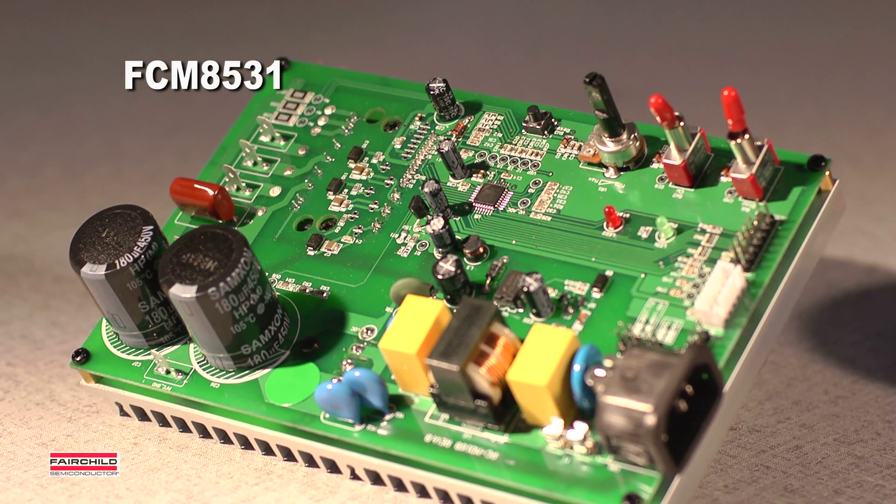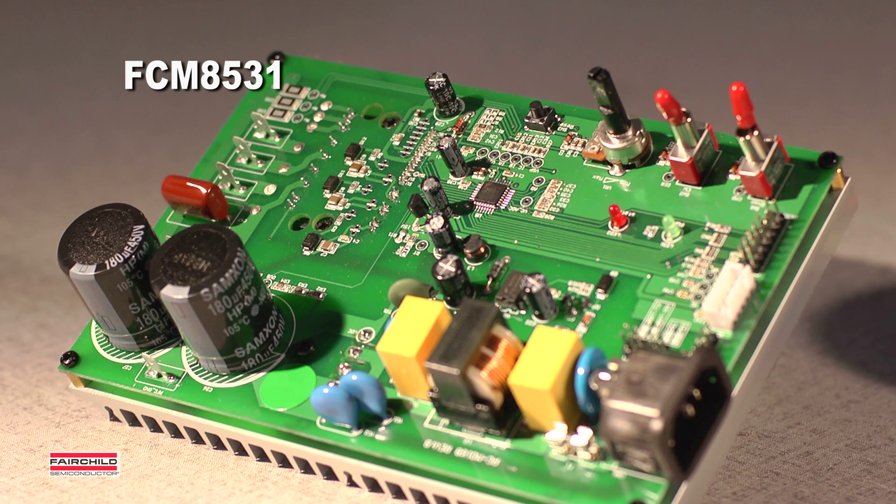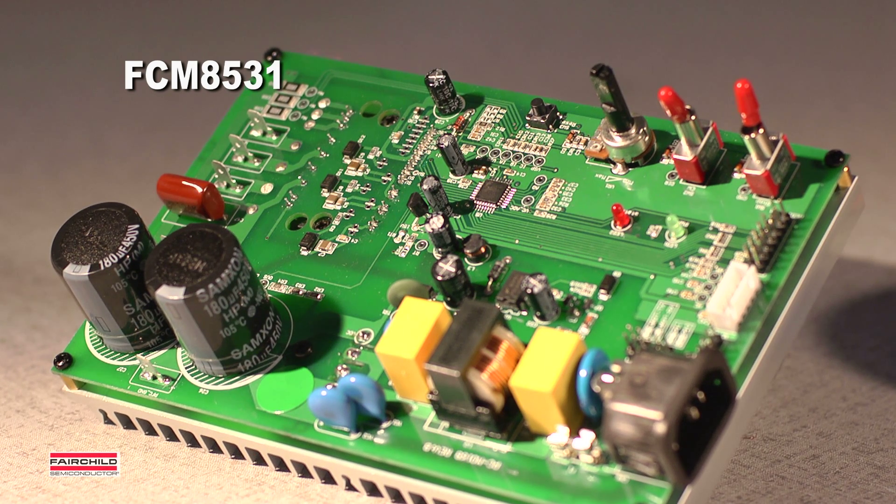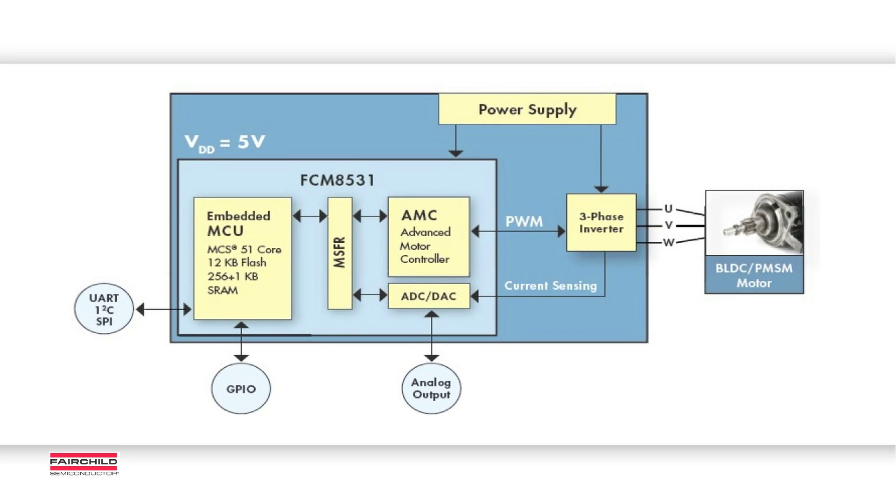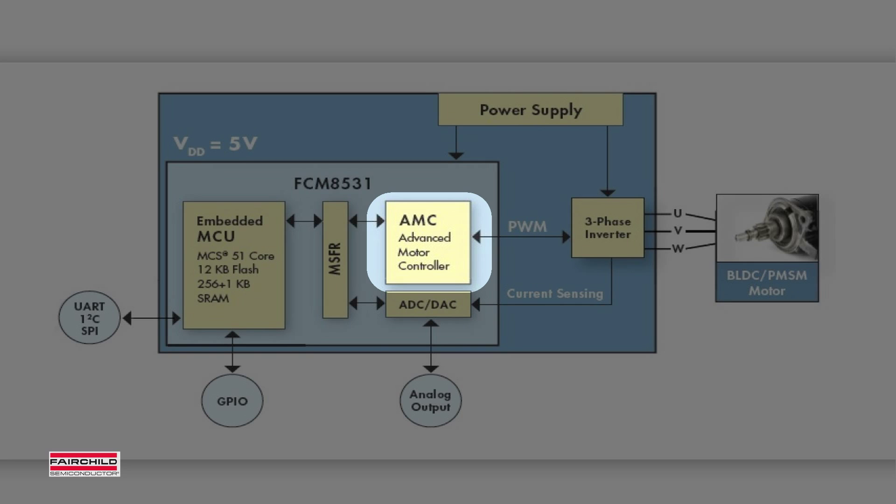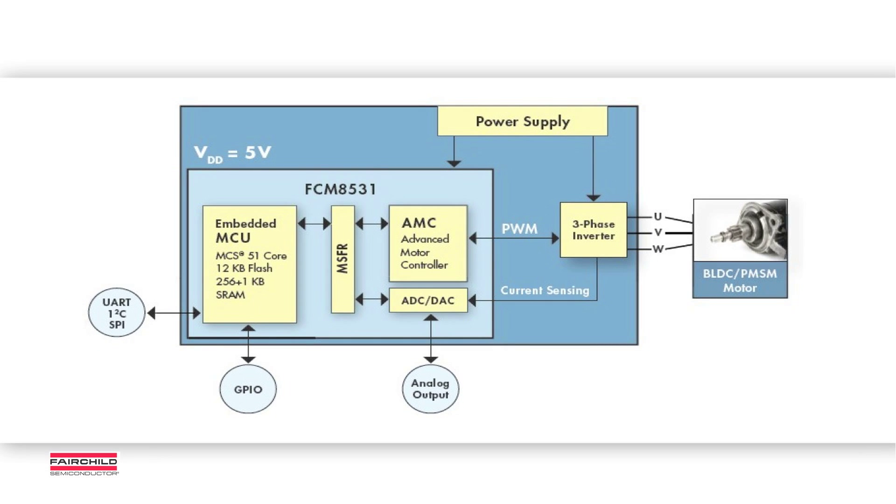The FCM8531 is a hybrid solution providing a parallel processing architecture with two cores. The embedded microcontroller, or MCU, provides system control, communications, and input-output interface. The advanced motor controller, or AMC, is a hardware-based motor controller with configurable processing core and different libraries for various applications.